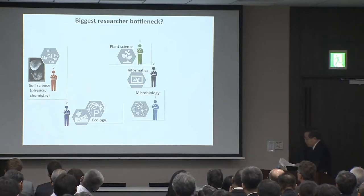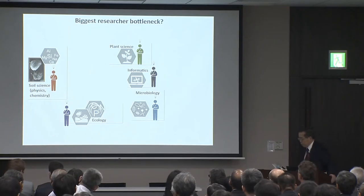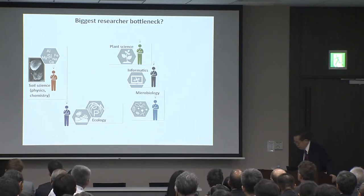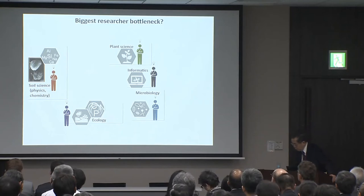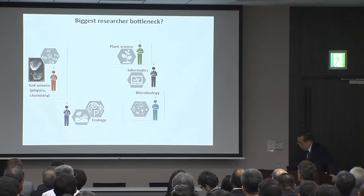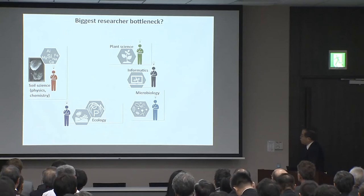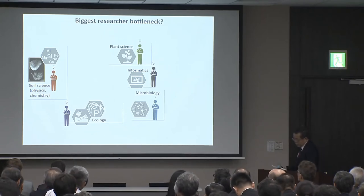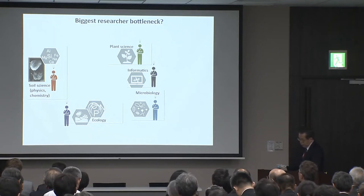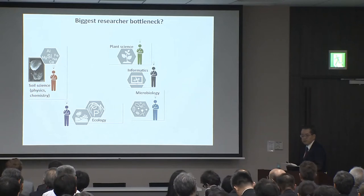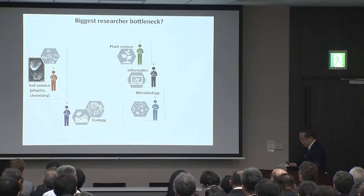I would like to point out the biggest bottleneck related to our moonshot targets. Researchers in soil science, ecology, microbiology, informatics, and plant science are largely independent, as if they were using different languages. There is a real lack of interdisciplinary collaboration among these fields so far.